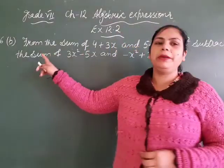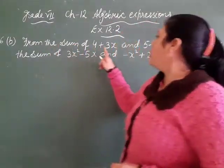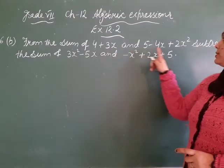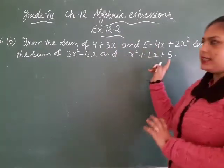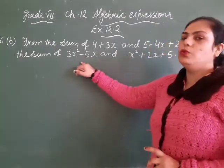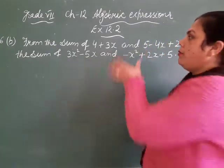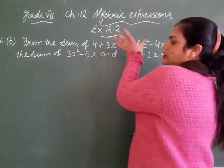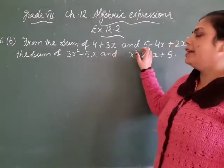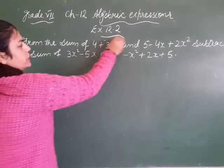Now we start 6B. From the sum of these two expressions, hum ek subtract karna hai — what is the sum of this and this. In do expressions ke sum mein se, us sum ko subtract karna hai. So firstly we find their sum — sum of the first two expressions.